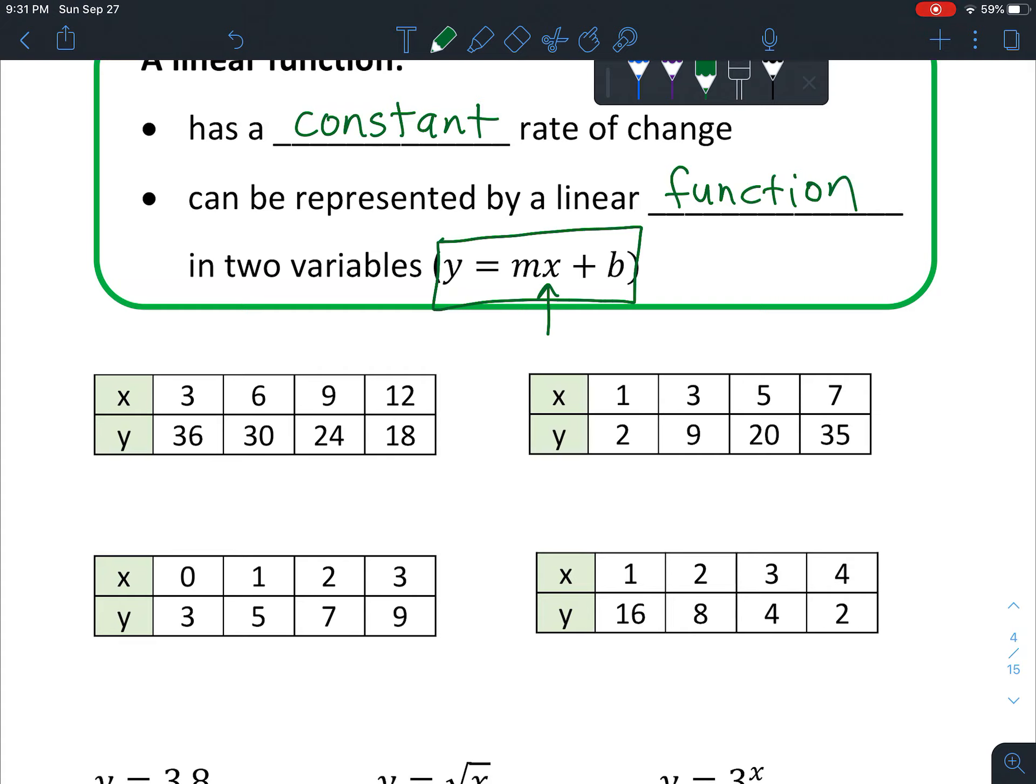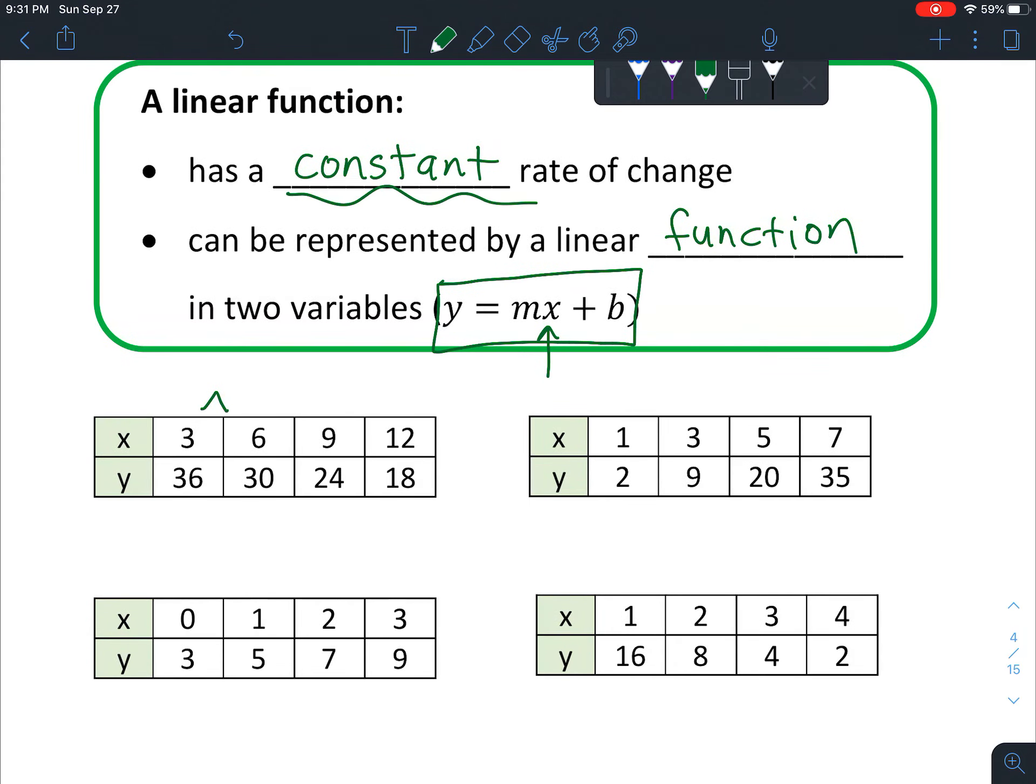To recognize this in a chart, you have to have a constant rate of change. This means when you subtract the numbers on top and they're equal, then when you subtract the numbers on the bottom you also get an equal number each time. For instance, 6 minus 3 is 3, 9 minus 6 is 3, 12 minus 9 is 3.